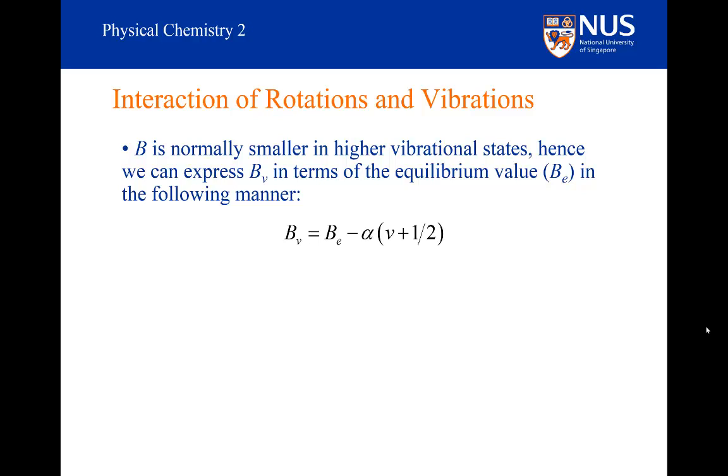Bₑ is a hypothetical rotational constant that the molecule would have at the bottom of the potential energy well, that is, when it would have no vibrational energy. So the rotational constant in level v is equal to Bₑ minus a constant alpha times (v plus a half).